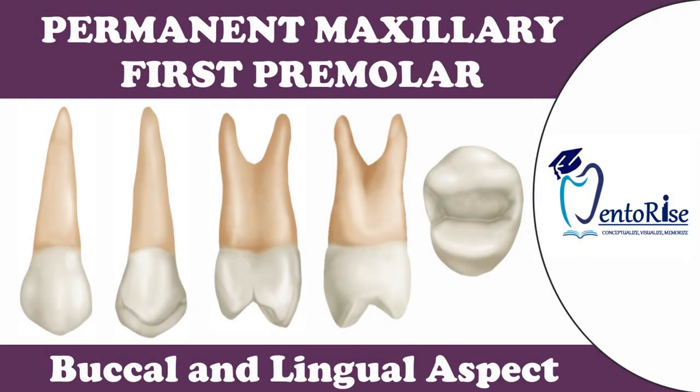In our series of dental anatomy so far, we have discussed in detail about the anatomy of anterior teeth, i.e. the permanent maxillary and the mandibular incisors and canines. Starting from this video, we will be dealing with the dental anatomy of the posterior teeth.